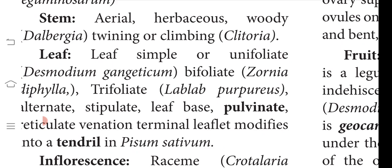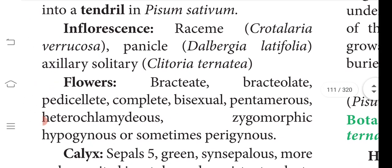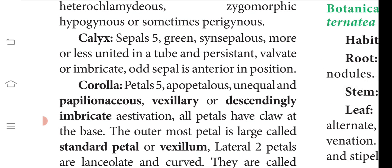Clitoria is an aerial herbaceous woody twining climber. The leaf is simple, unifoliate, bifoliate, or trifoliate, and stipulate — having a small projection below the leaf stalk called the stipule — with a pulvinate leaf base, meaning the leaf base is slightly bulged. Inflorescence is racemose or panicle; sometimes axillary solitary flowers are found. The flowers of Clitoria ternatea are axillary solitary, bractiate, bracteolate, pedicellate, complete, bisexual, pentamerous, heterochlamydeous, zygomorphic, and hypogynous.